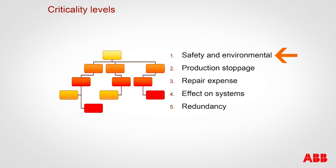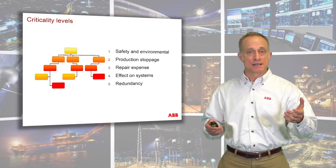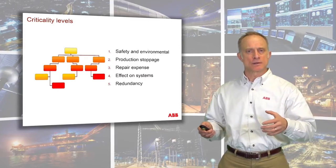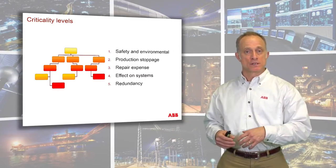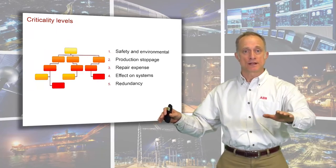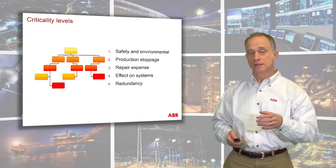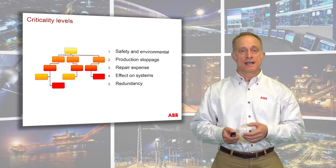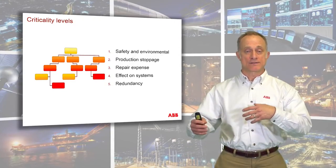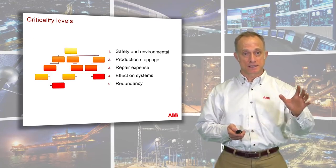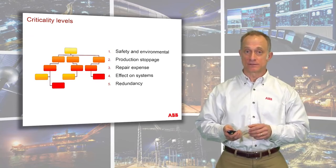The next consideration is production stoppage — if you're not making product, you're not making money. Third is maintenance expense: how costly is it to repair a certain piece of equipment? Fourth is the effect on systems — what ripple effect will a failure have on other equipment? And fifth is redundancy: does the process have redundant features so that if it fails in one area, it picks up in another? Lacking redundancy results in a higher criticality level.